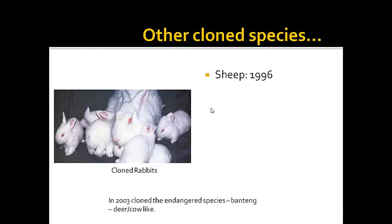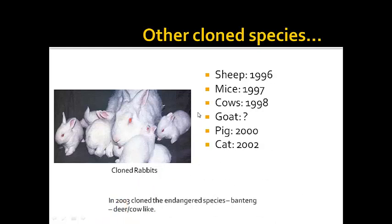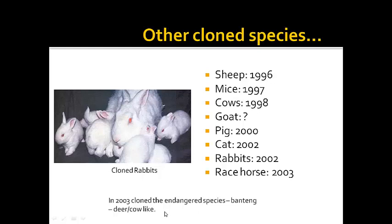Other cloned species include mice, cows, goats, pigs, cats, rabbits — why we feel the need to clone rabbits, they do a pretty good job of reproducing on their own, but it has been done — and race horses in 2003, which brings up possible legal and ethical issues. We've also tried to clone endangered species. The banteng was a deer-cow-like creature and they tried to bring it back. They're also thinking of trying to clone a woolly mammoth — they've found woolly mammoths intact enough that the DNA in those cells may still be viable. Again, that brings up some pretty strong ethical considerations.